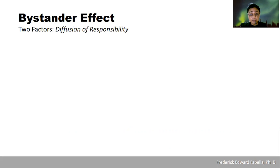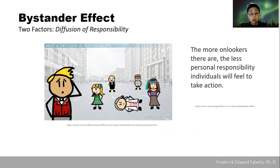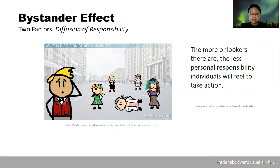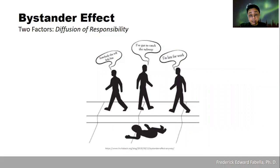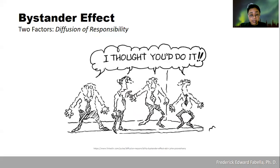Let's discuss the first factor — it's called diffusion of responsibility. When does diffusion of responsibility happen? The more onlookers there are, the less personal responsibility individuals will feel to take action. That's what happened to Kitty Genovese. If people see something happening, they will come up with different excuses not to help — everyone else will think that someone else will help. That is diffusion of responsibility.